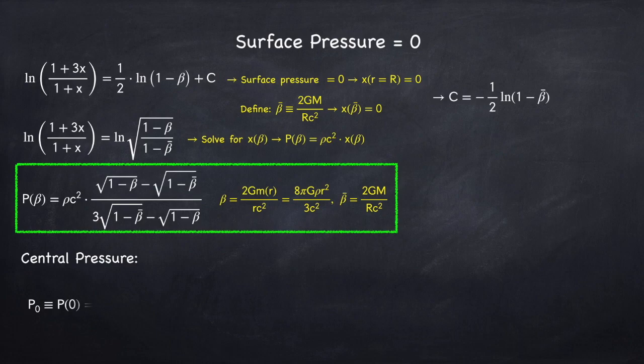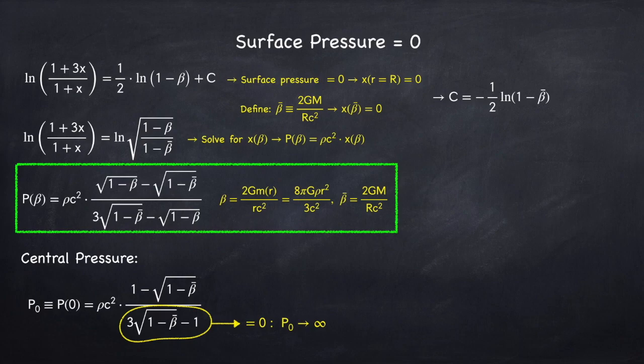The central pressure, which is when r equals zero or beta equals zero, turns out to be the following. So this is the pressure at the center of the star, but take a look at this denominator. What happens when this equals zero? The pressure will go to infinity.